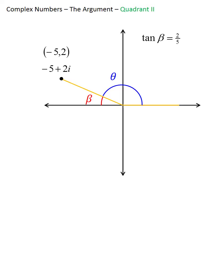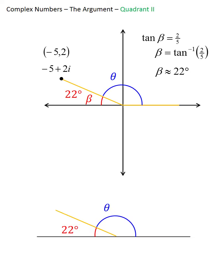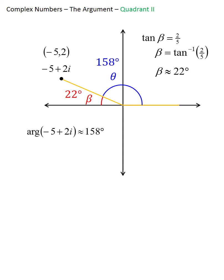Because beta is an acute angle between 0 and 90 degrees, we can use the inverse tangent to find it. A calculator gives a decimal that rounds to about 22 degrees. Now, theta and 22 together form a half circle, meaning 22 + theta = 180. By subtracting, we find theta — the argument of -5+2i — is 158 degrees.